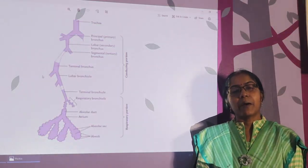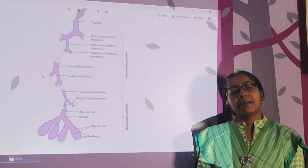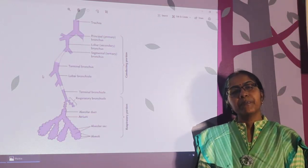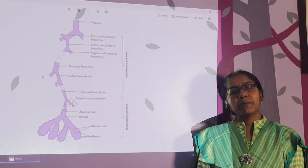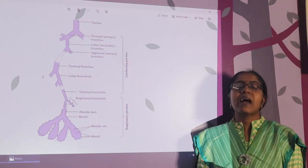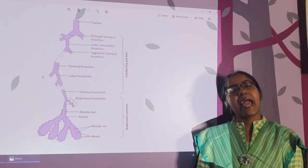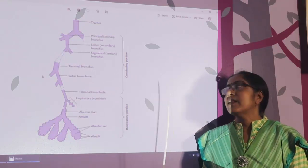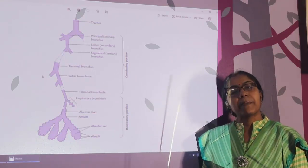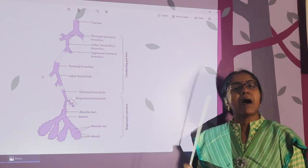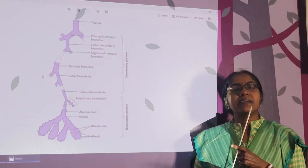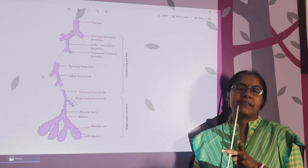We will start with blood supply — that is arterial supply and venous drainage. The lung is supplied by two sets of arteries: bronchial arteries and pulmonary arteries.